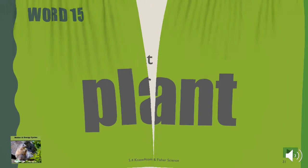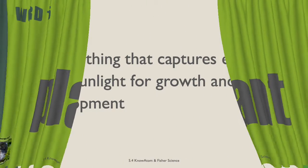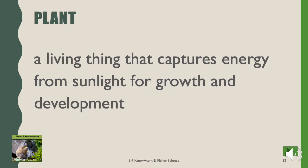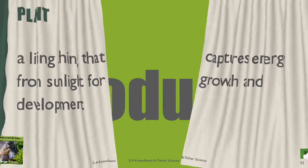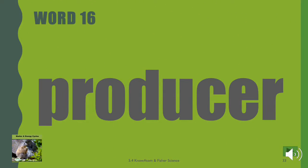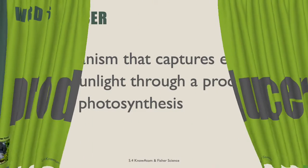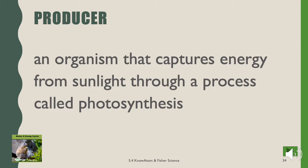Plant. A plant is a living thing that captures energy from sunlight for growth and development. Producer. A producer is any organism that captures energy from sunlight through a process called photosynthesis.